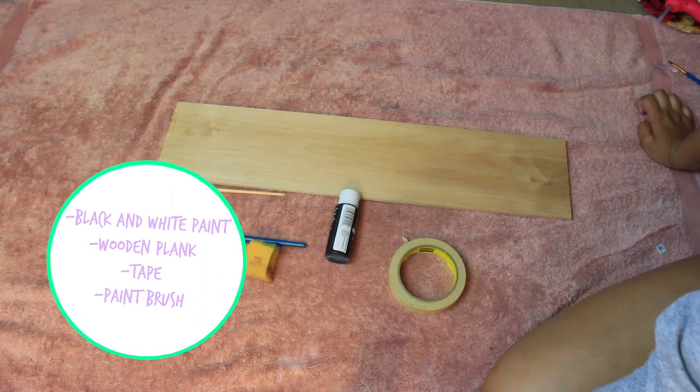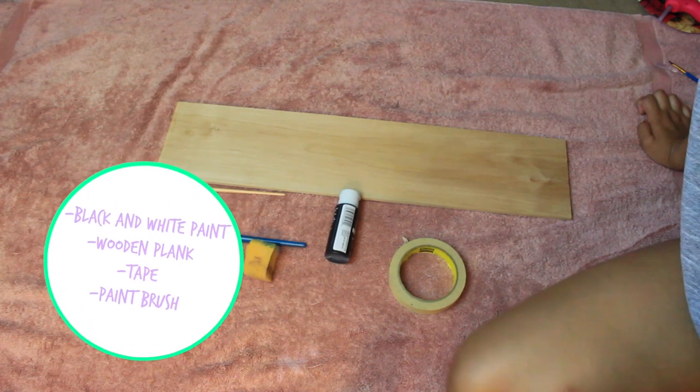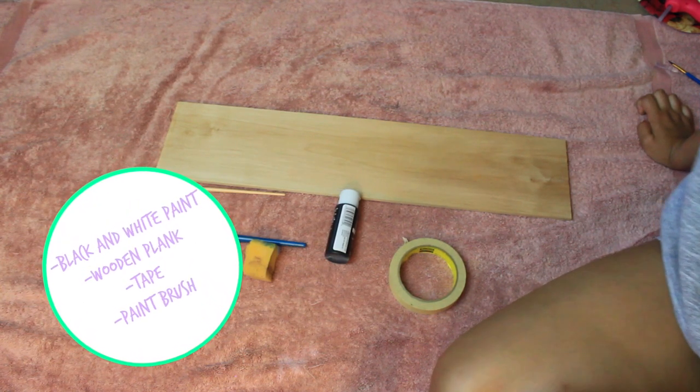For this DIY you will need black and white paint, a wooden plank, tape, a paintbrush, and some scissors too.